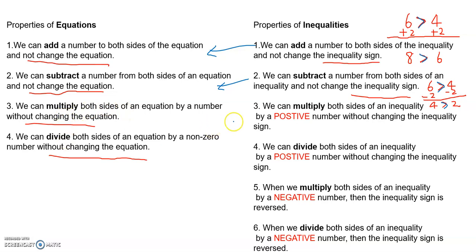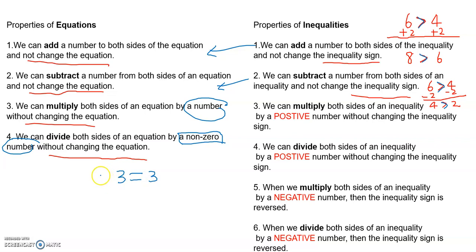For multiplication and division, it's going to be different for inequalities. Notice that for equations, we don't care whether we're multiplying or dividing by positive or negative numbers — except we cannot divide by zero. But for inequalities, if we multiply both sides by a positive number, it's not going to change the inequality sign.